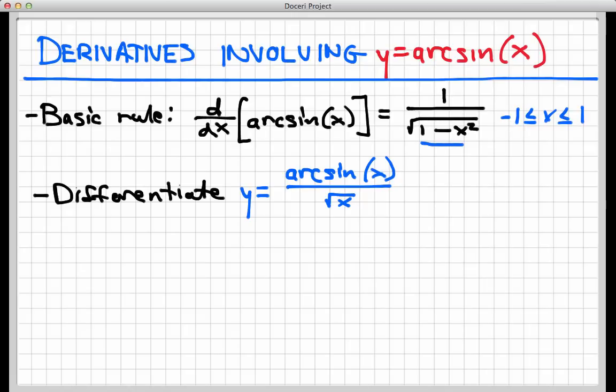So with that basic rule, we can compute some more complicated derivatives. Let's start with y equals arc sine of x divided by radical x. So how am I going to approach this? Well, like we've seen before in deciding which rule I should use first in a given problem, I want to zoom out and think about how the function is put together on a global scale.